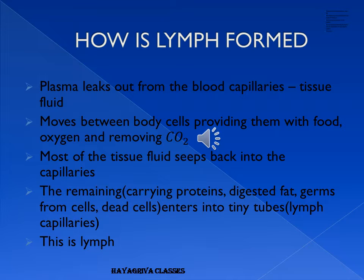How is lymph formed? There is plasma in the blood. Plasma leaks out from the blood capillaries when blood carries food and oxygen around the body. This plasma which leaks out through the blood capillary walls moves between all the body cells, providing them with food and oxygen and removing carbon dioxide. This fluid is called tissue fluid.